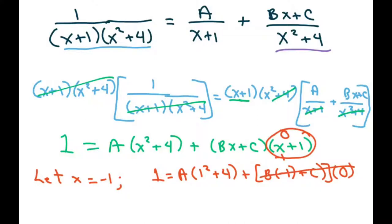So what happens is that 0s out. This equals 5, so you get 1 equals A times 5. I'll put the 5 in front, so A equals 1/5.